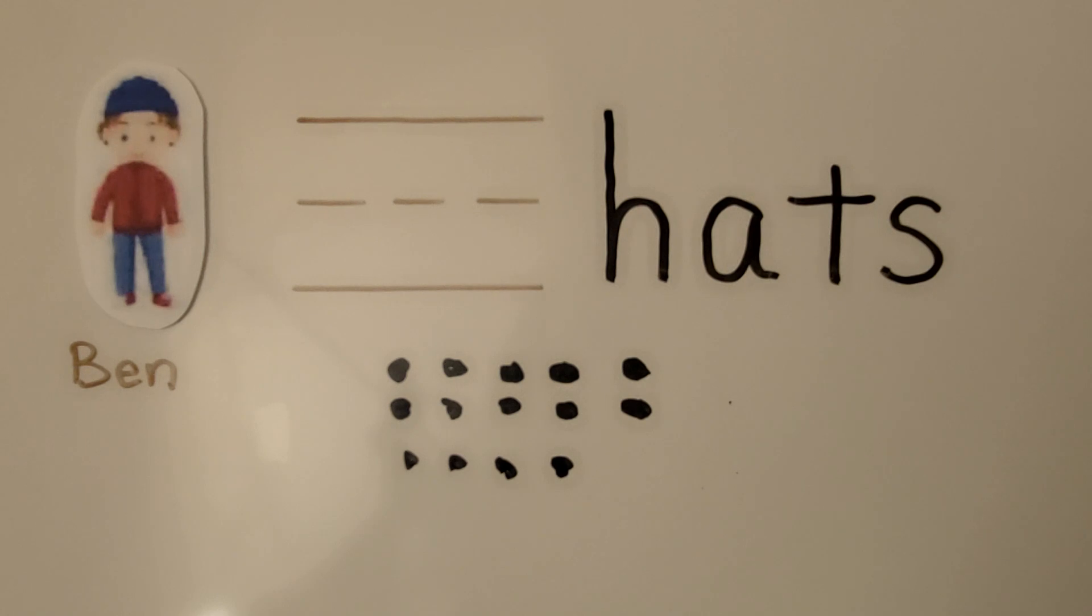We have 14 dots for the 14 hats that are in his closet. Then we draw one more for the hat he's wearing because we need to know how many hats he has in all. We need to count the one he's wearing. 14, and one more is 15.